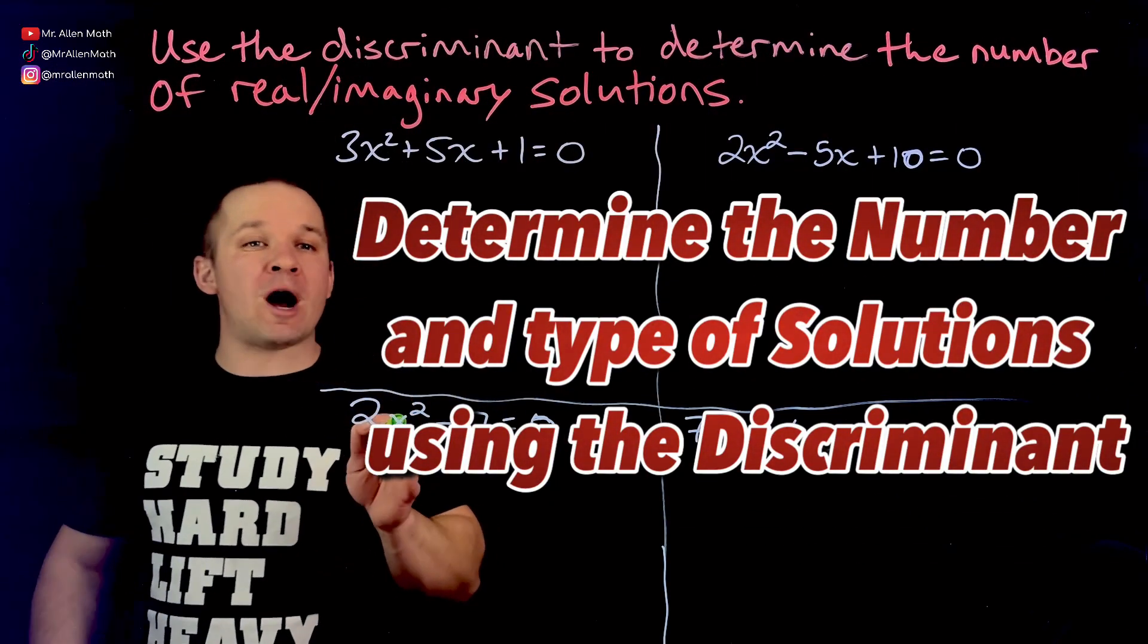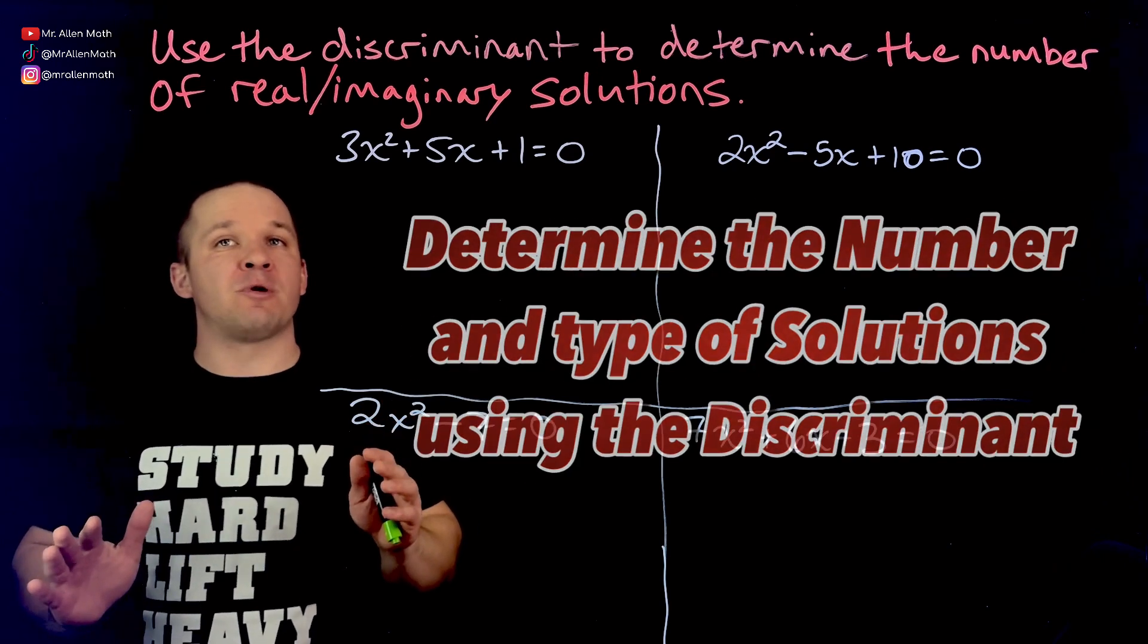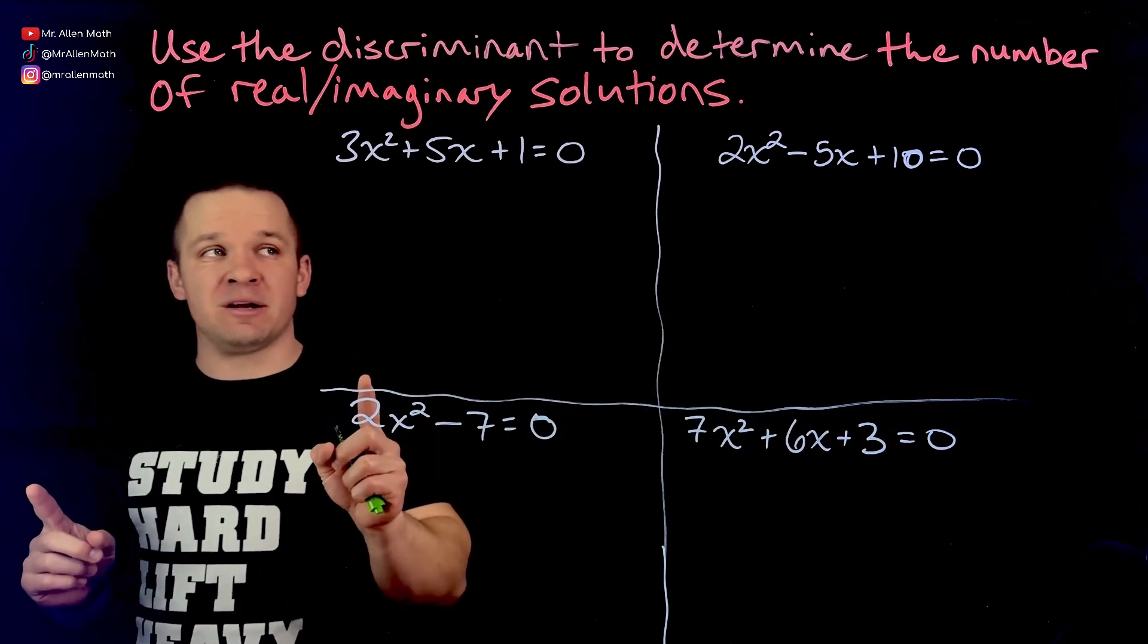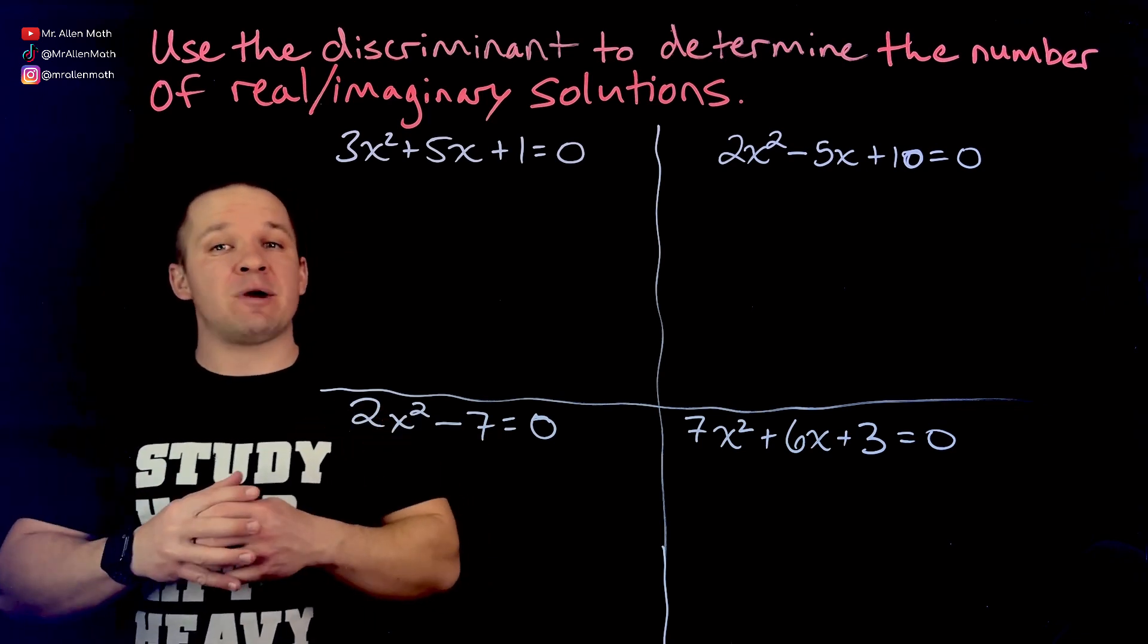What's poppin' dogs? Mr. Allen here with some quadratic equations, but we're not asked to solve these four quadratic equations. We're asked to use the discriminant to determine the number of real or imaginary solutions that we have.